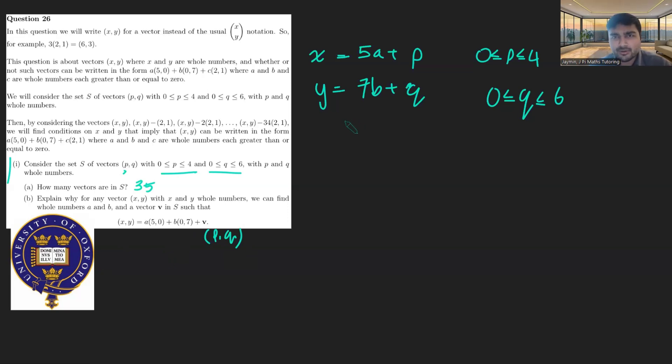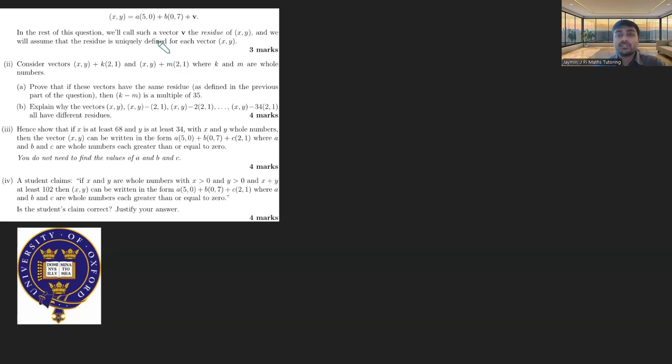Let's move into the harder parts of the problem. For the rest of this question, we'll call such a vector v the residue of x,y. And we'll assume that the residue is uniquely defined for each vector x,y. So we know from the previous part we can write any vector in this form, and we're just calling v the residue. Part two: consider vectors (x,y) plus k times (2,1) and (x,y) plus m times (2,1), where k and m are whole numbers. We want to prove that if these vectors have the same residue, then k minus m is a multiple of 35.